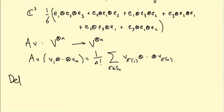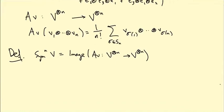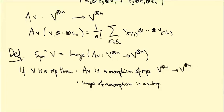We define Symⁿ(V) as the image of the averaging map from V^{⊗n} to V^{⊗n} — it's the set of all averaged tensors, which are symmetric by construction. To show this is a sub-representation when V is a representation, we'll show: first that the averaging map is a morphism of representations from V^{⊗n} to V^{⊗n}, and second that the image of any morphism of representations is a sub-representation.